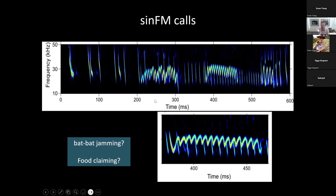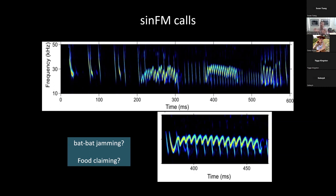I tried to think of other hypotheses. Could it be food claiming calls — where one bat is simply communicating to the other, 'that one's mine, don't mess with it'? That does happen in some cases, but usually not this late, not when the other bat is doing a feeding buzz. I also thought maybe it could be cooperation — maybe the bats are working together and this signal is disrupting the prey's ability to avoid the predator. We set out our different hypotheses and designed experiments to test those in the field.